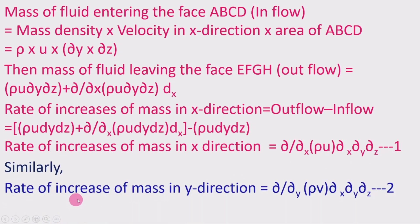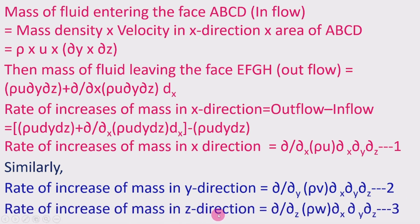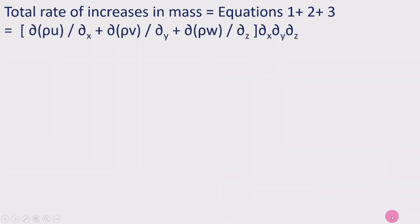Similarly, the rate of increase of mass in the y-direction equals (∂/∂y)(rho·v)·dx·dy·dz — taken as equation 2. And the rate of increase of mass in the z-direction equals (∂/∂z)(rho·w)·dx·dy·dz, which is the rate of change of mass flow in the z-direction — taken as equation 3.